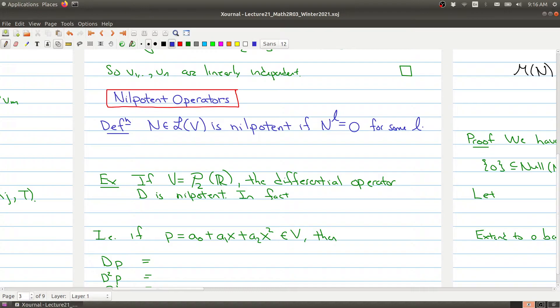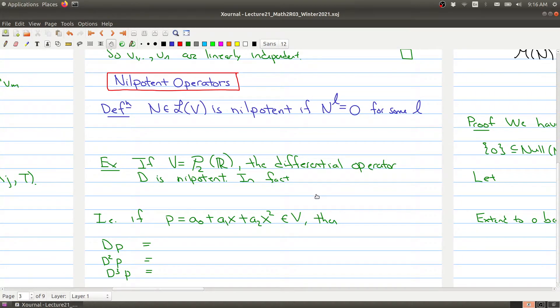Let me give you an example that comes from calculus and may be a little bit more familiar to you. If we take the vector space of all polynomials of degree 2 or less, the differential operator D is nilpotent. So in fact what we know is that D cubed is equal to 0. What this is really saying is that if you take a polynomial of degree 2 or less and you take its derivative three times, you'll end up with 0.